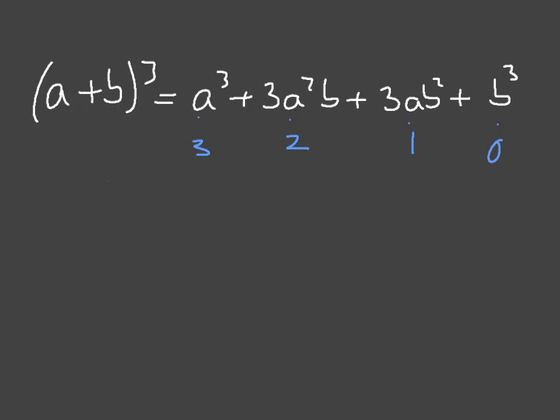Now let's focus on the powers of b. In the first term there's no b, but that just means b to the power of 0, which equals 1. In the second term we have b to the power of 1, in the third term b squared, and in the final term b cubed. The power of b always starts at 0 and increases by one unit every term, all the way up to the power of the exponent.